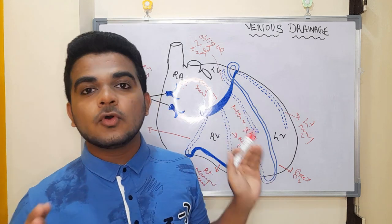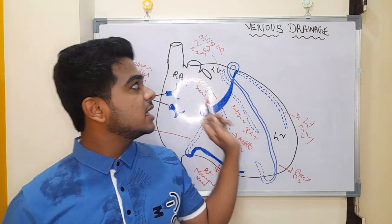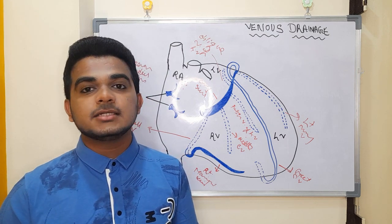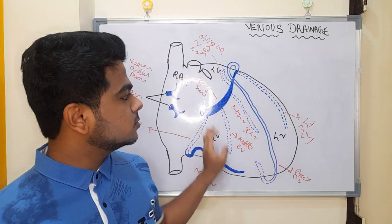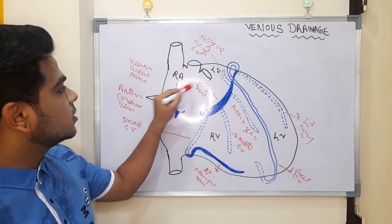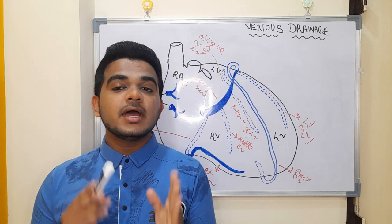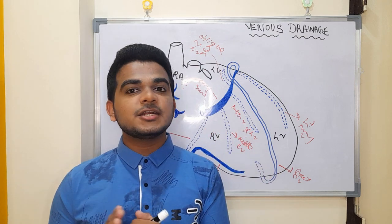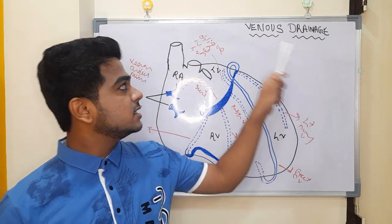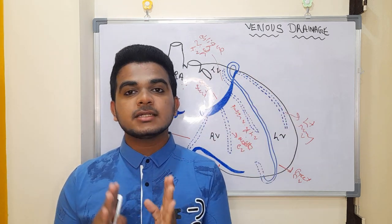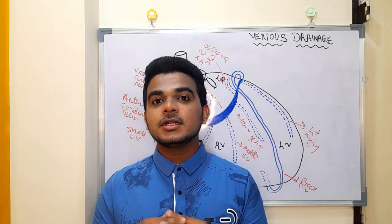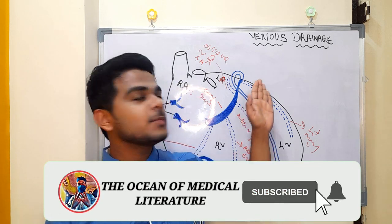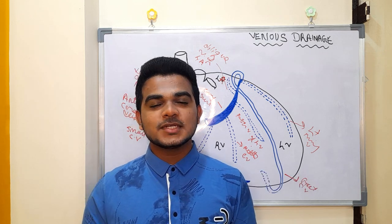Finally, the coronary sinus drains all the deoxygenated blood into the right atrium. That is all about the venous drainage of the heart. If you know the arterial supply of the heart, venous drainage is very easy to understand. These seven veins are branches of the coronary sinus, along with the anterior cardiac vein and vena cordis minimi — these three major veins are frequently asked in examinations. Visit the Instagram page 'The Ocean of Medical Literature' for detailed notes. Please share with your medico friends, subscribe to my channel, and don't forget to press the bell icon.